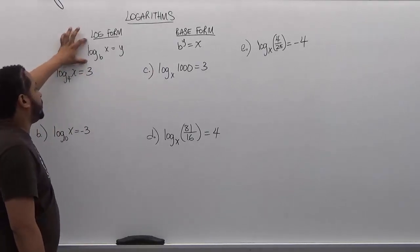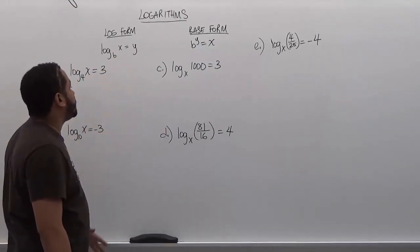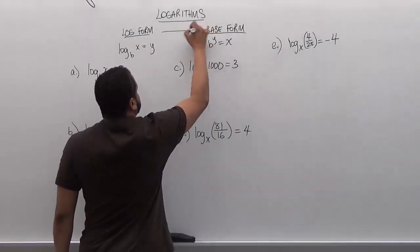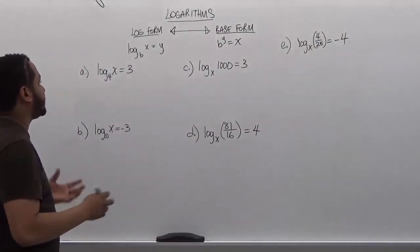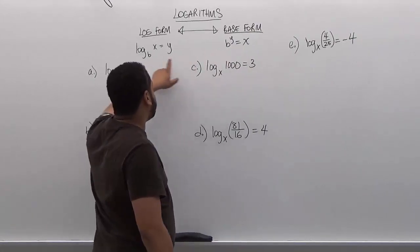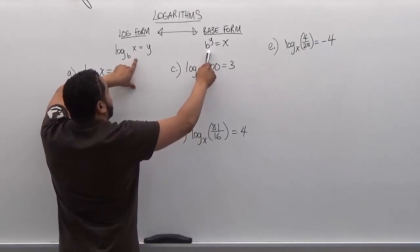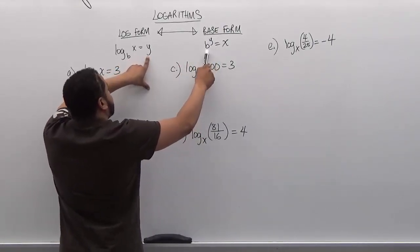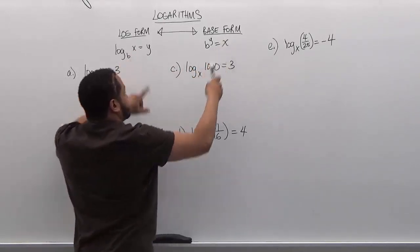In logarithmic form we have a log with a base, a term, and a solution. When transforming something from log form to base form or vice versa, these values remain the same — they easily exchange over. The base term becomes the base of the exponential expression. The solution of the log is the exponent of the base form. And the term that we're taking the log of is the solution to the base form.